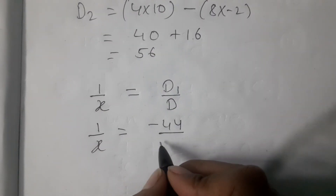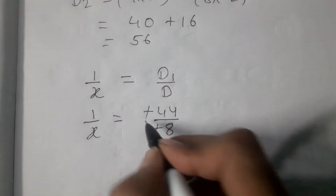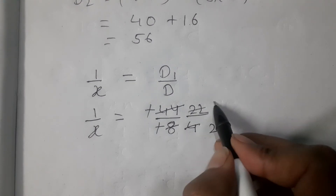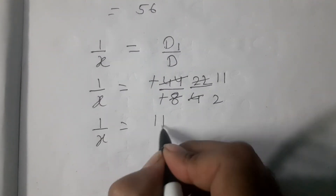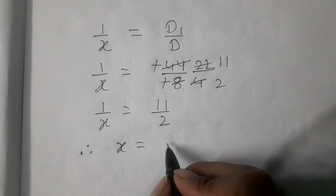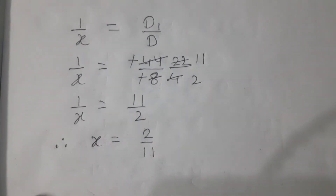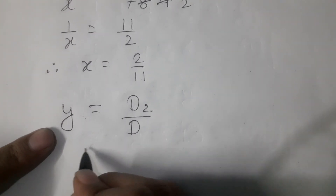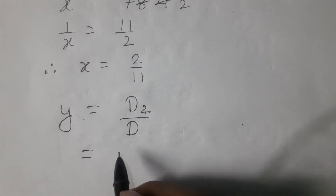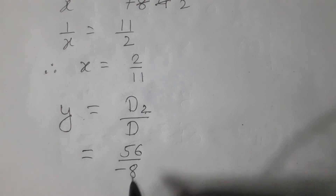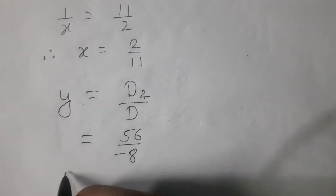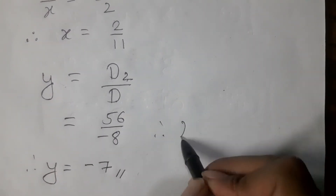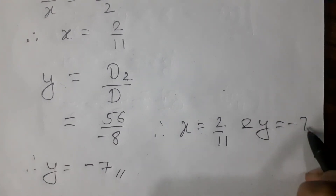So D is minus 8. The minus-minus cancels. So 1 by x is equal to D1 by D, which equals minus 44 divided by minus 8. Simplifying: 1 by x equals 11 by 2, so x equals 2 by 11. Then y equals D2 by D, and D2 equals 56. So 56 divided by minus 8 equals minus 7. Therefore, x equals 2 by 11 and y equals minus 7. These are our answers.